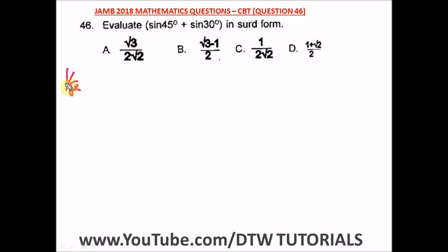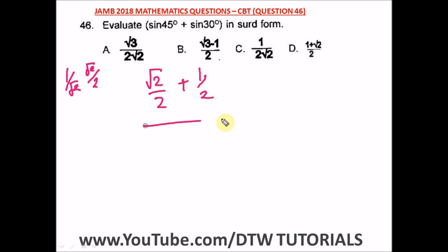So sine 45 is one over root two, and you can't leave a root in the denominator. If you rationalize, you get root two over two. So sine 45 is root two over two. Plus, what is sine 30? That is one half. So let us add these up — the LCM is two.